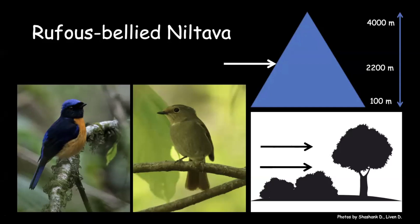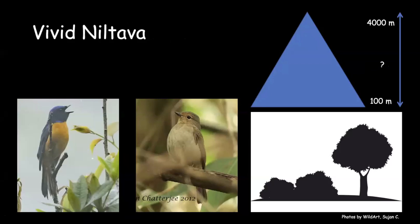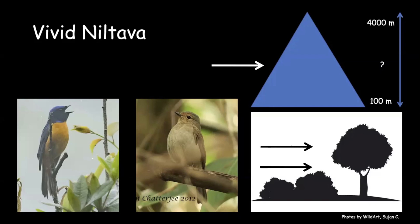Rufous-bellied niltava goes up to 2,000 meters when breeding and winters all the way down to 100 meters, just like other niltavas. Comparing with vivid niltava: vivid niltava is much more slender with a flatter head compared to rufous-bellied niltava. The song is very distinct. Vivid niltava winters in south Assam hills and southeast Asia, with one subspecies present all the way in Taiwan. Seen around 2,000–2,200 meters in both western Himalayas and Mishmi Hills. Found slightly higher up in the canopy compared to rufous-bellied niltava.